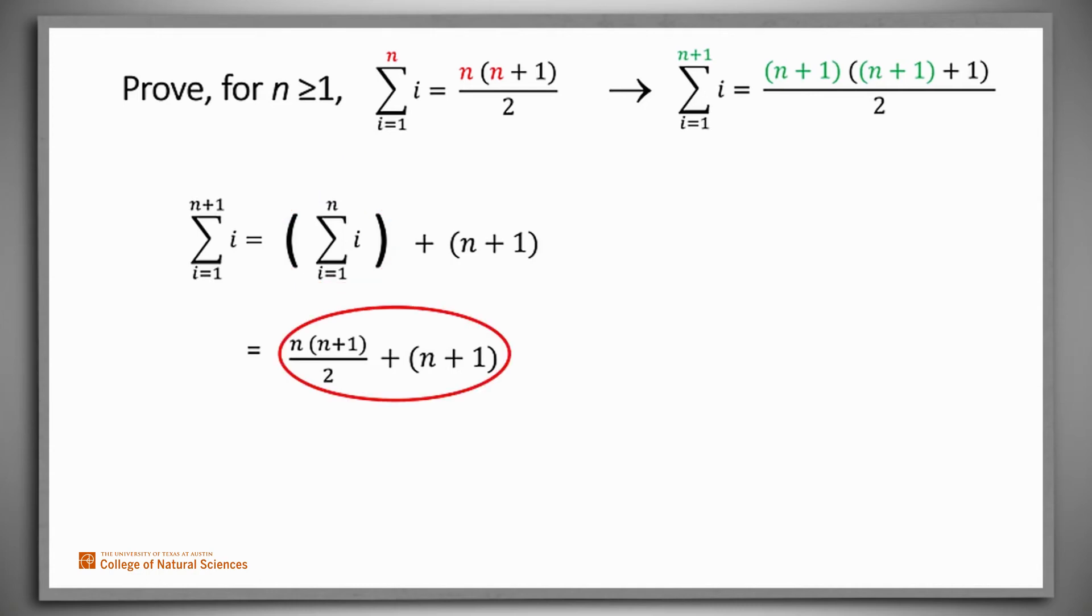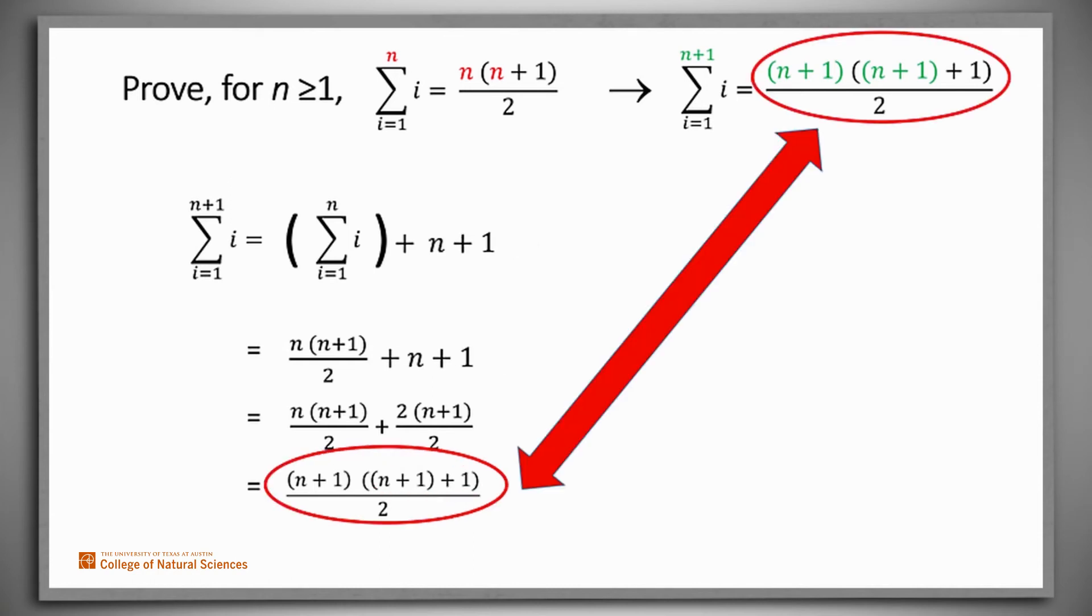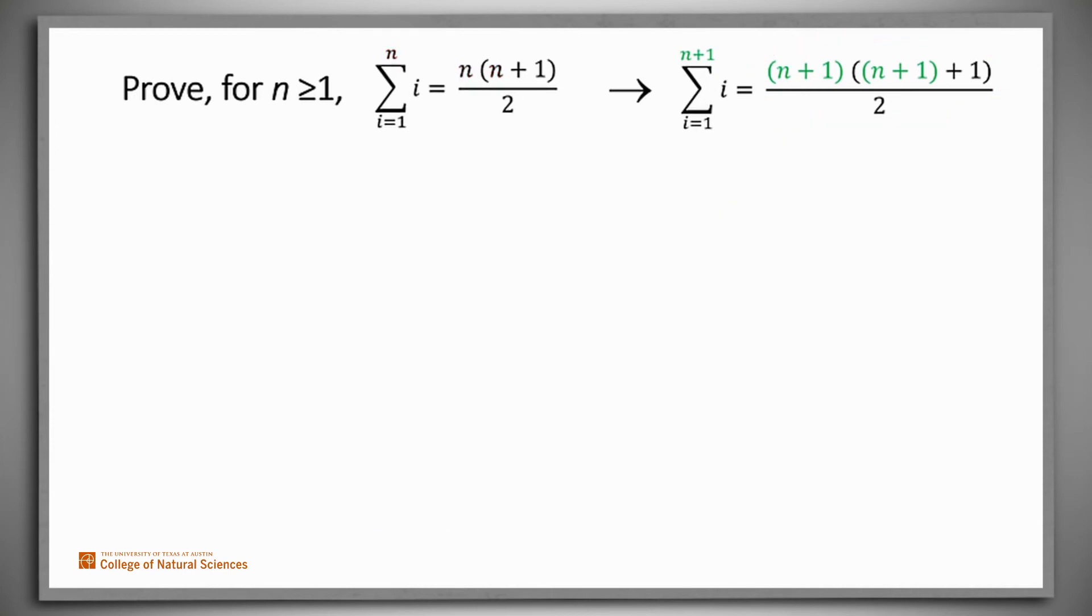Now we need to simplify this expression, and in particular, we have a goal. We need to show that it's equal to this. We notice that we need n plus 1 over 2 as a factor, so we'll rewrite the n plus 1 term by multiplying and dividing by 2. Now both terms have n plus 1 over 2 as a factor. We can combine them. We get n plus 1 times n plus 2. But in order to match our goal, we'll write n plus 2 as n plus 1 plus 1. The two expressions match. So we've shown that if we assume P of n, we can conclude P of n plus 1.